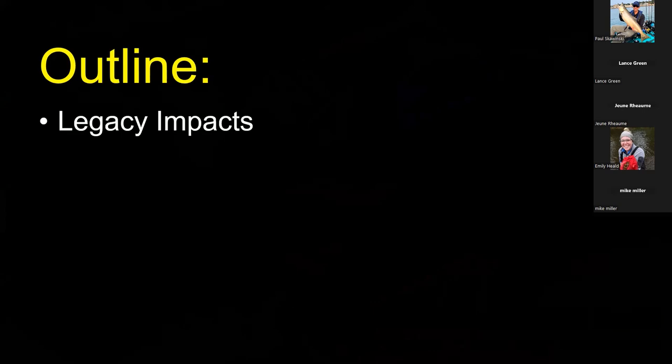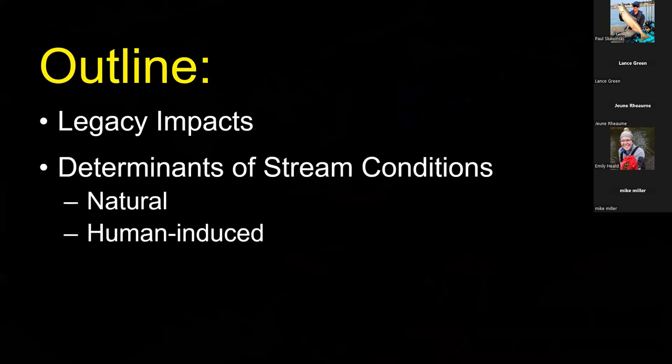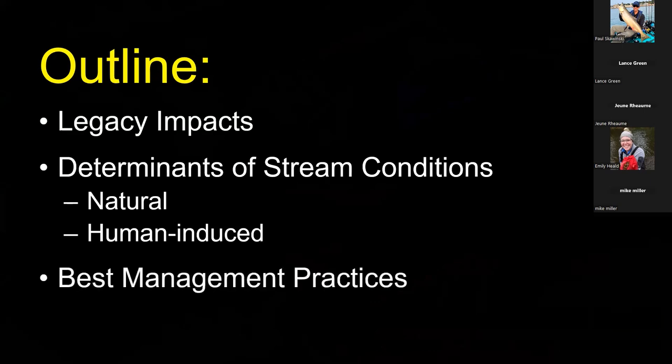There are three things I want to cover: first, legacy impacts to our aquatic resources — things humans did well over 100 years ago that still affect our streams today. Second, the major factors that determine stream conditions, covering both natural factors like bedrock geology and topography, and human impacts on watersheds. Lastly, I'll briefly touch on best management practices. In Wisconsin, about 30% of land use is agriculture, so that's a key audience for engaging in BMPs.